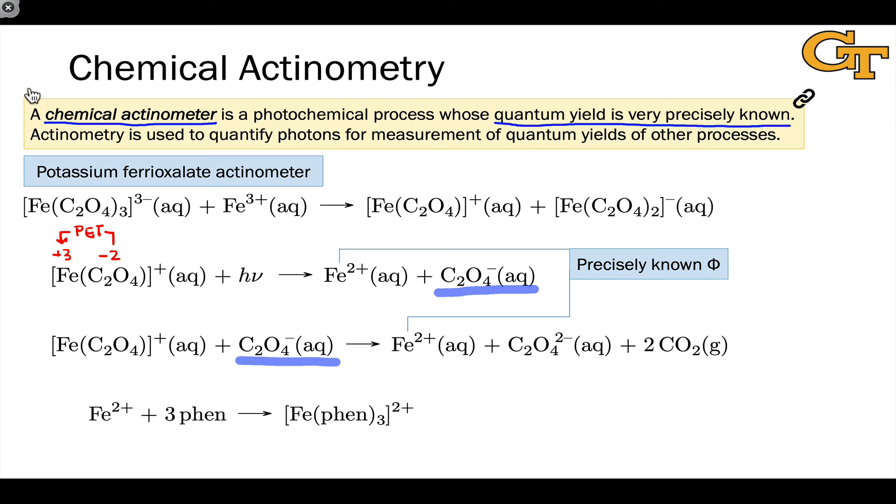This is a very brightly colored molecule, the iron-2 phenanthrolene complex. We can do absorption spectroscopy on this, take advantage of Beer's Law to measure the amount of this complex, in turn measure the amount of Fe2+ generated. And if we have precise knowledge of the number of photons impinging on the sample...